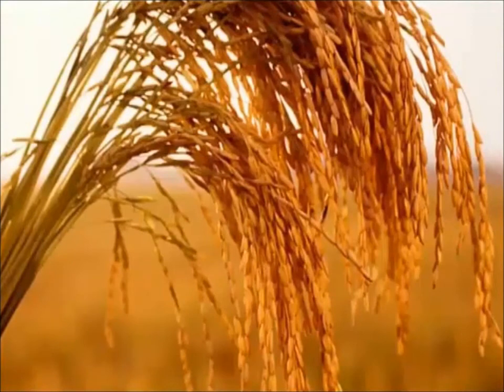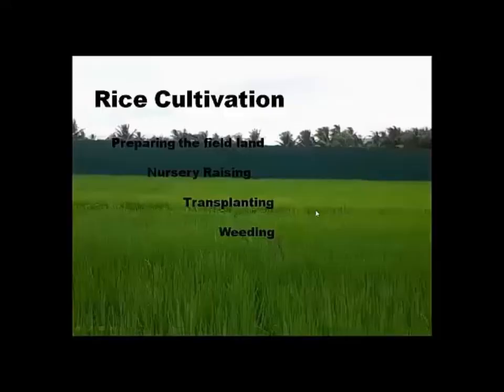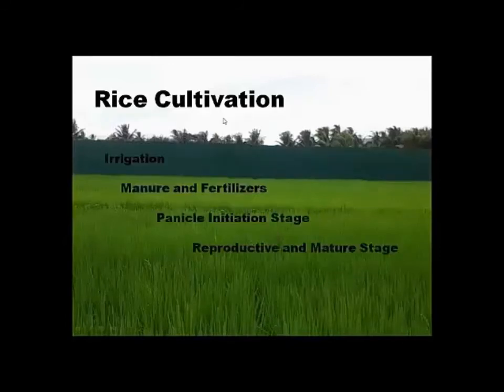Rice is normally grown and well planted in tropical areas. Rice cultivation includes preparing the field land, nursery raising, transplanting, weeding, irrigation, and harvesting.